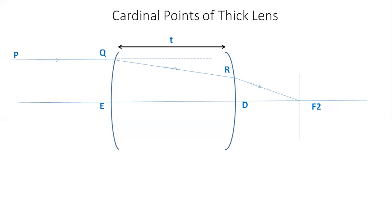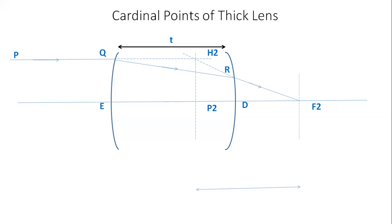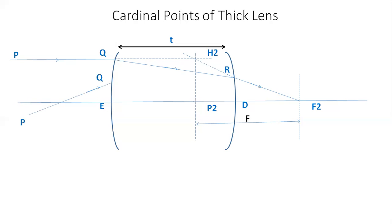Extrapolate P2 in the forward direction and F2R in the backward direction; they meet at point H2. At point H2, draw the plane perpendicular to the principal axis, which cuts the principal axis at point P2 — this is the second principal point. The distance between the second principal point and the second focal point is the focal length of the thick lens. PQ is the incident light, QR is the refracted light, and RS is the emergent light.